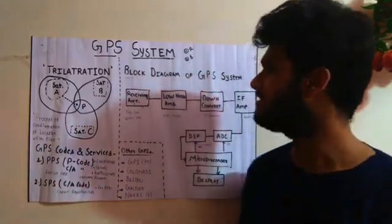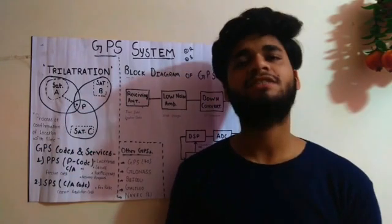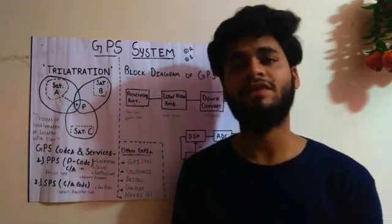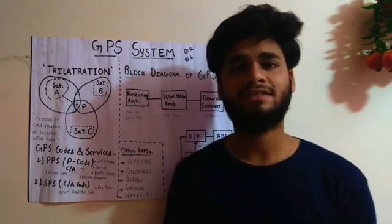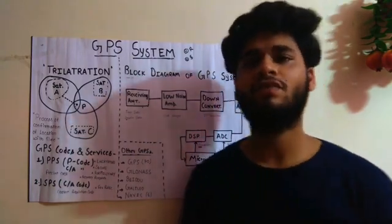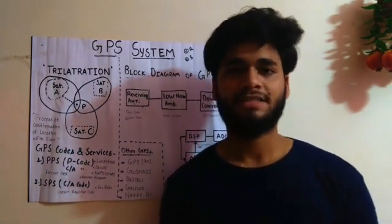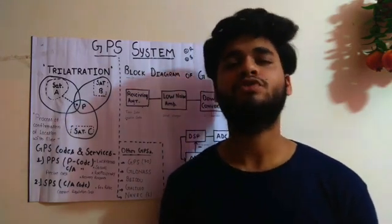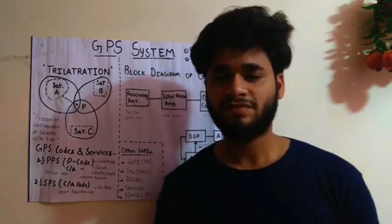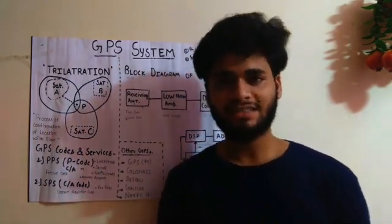From the process of trilateration, our GPS receiver receives signals from GPS satellites in the form of codes, known as GPS codes. GPS codes are of two types: P code and CA code. P code stands for Precise Code — it is in the form of encrypted data, making it more secure, more accurate, and more precise. CA code stands for Coarse Acquisition code and is used for public domains. Based on these two codes, GPS service is divided into two types: PPS (Precise Positioning System), used by military services, and SPS (Standard Positioning Service). PPS receives both P code and CA code — P code is also known as Y code — while SPS gains only the CA code from satellites.